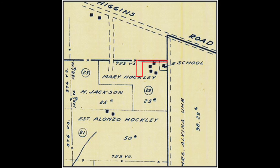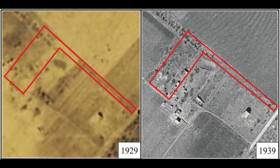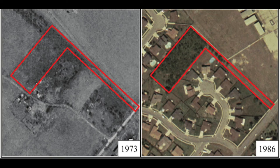A map from 1929 shows the parcels of land and who owned them, with a red rectangular area marking where the Hockley Clay Cemetery is. Aerial views provided in the report date back to 1929, showing the cemetery's progression throughout the years. Sometime in the 1970s, a descendant of the Hockleys, Esther Jane Hockley Clay, sold the property to developers.